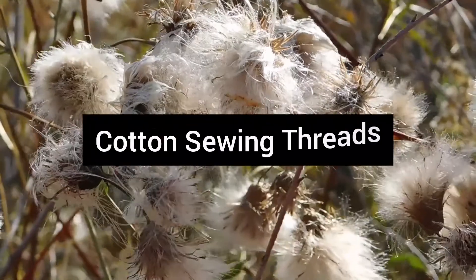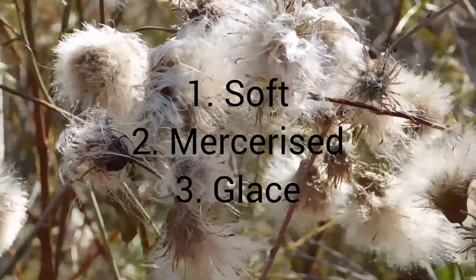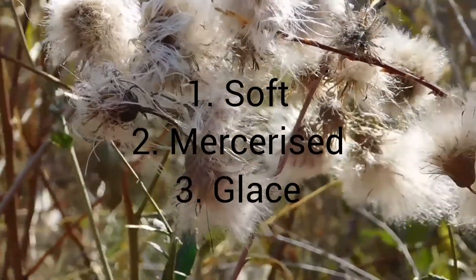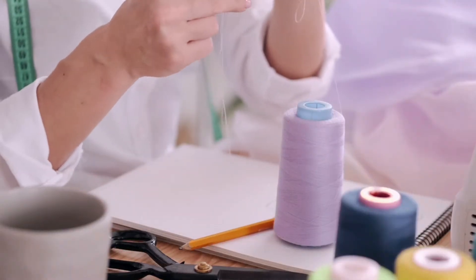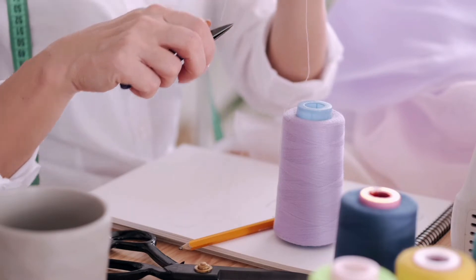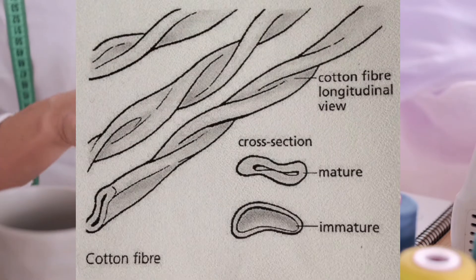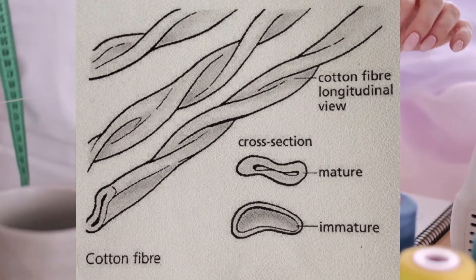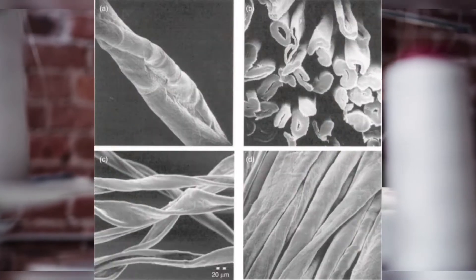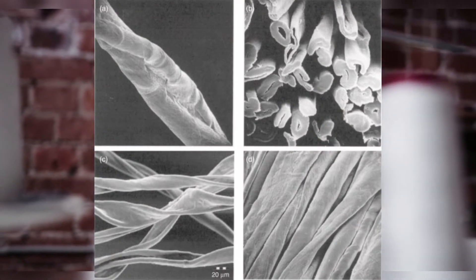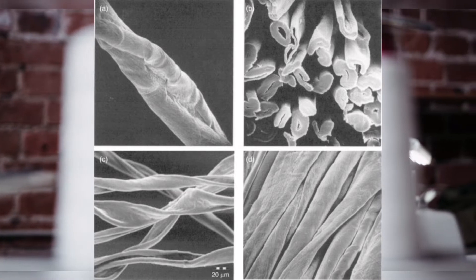Cotton sewing threads are of three types: namely soft, mercerized, and glass. Soft threads have no special treatment other than bleaching or dyeing and the application of a uniform, low-friction lubricant. The untreated cotton fibers have a flattened ribbon-like appearance with frequent convolutions, and in cross-section under the microscope they look like collapsed hollow tubes.